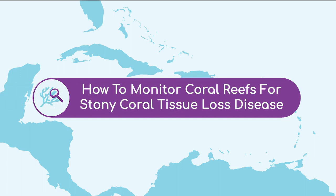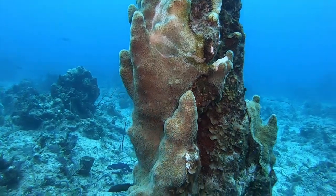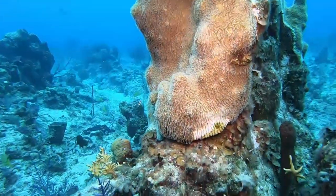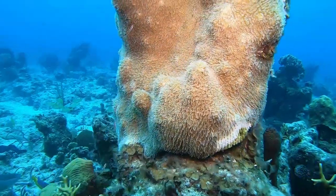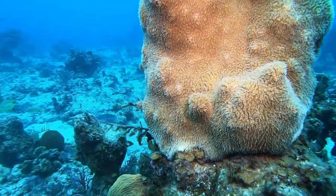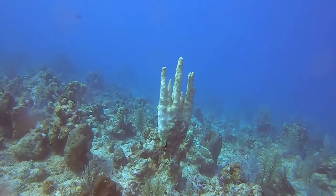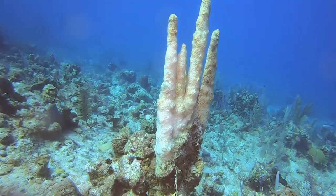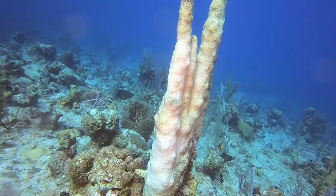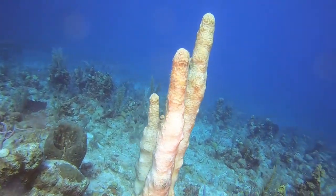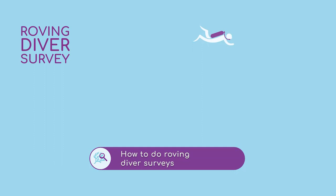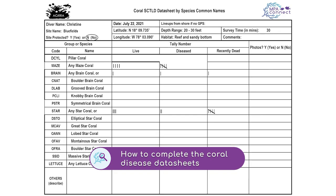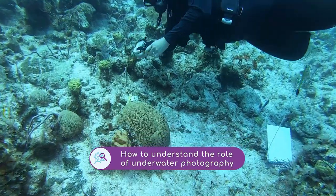How to Monitor Coral Reefs for Stony Coral Tissue Loss Disease. Stony Coral Tissue Loss Disease is a new disease that spreads extremely rapidly, has very high rates of prevalence, and causes very high mortality amongst over 30 susceptible stony coral species. This video will show you how to monitor your reefs for stony coral tissue loss disease, where to focus your monitoring efforts, how to do roving diver surveys, how to complete the coral disease data sheets, and understand the role of underwater photography.